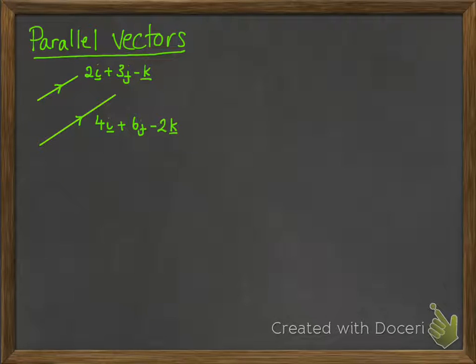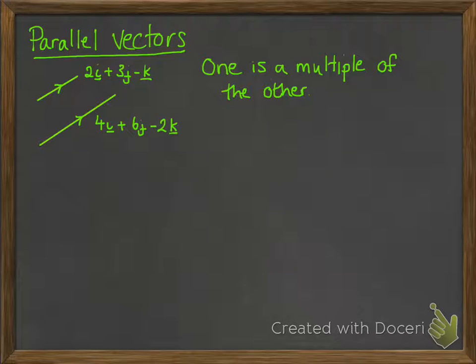So you can see all of those coefficients of the i, j and k. One is twice the other. So if your vectors are parallel, one is always a multiple of the other. You could also have it going the opposite direction. It's still parallel. This would just be a negative multiple.